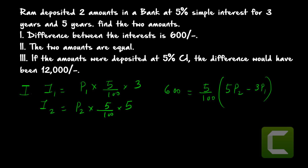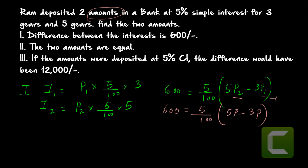Statement two says the two amounts are equal, i.e., P1 = P2 = P. Combining with statement one: 600 = (5/100)(5P − 3P). Now there is only one unknown, P, and we can easily solve for it. So statements one and two together are sufficient to answer the question.